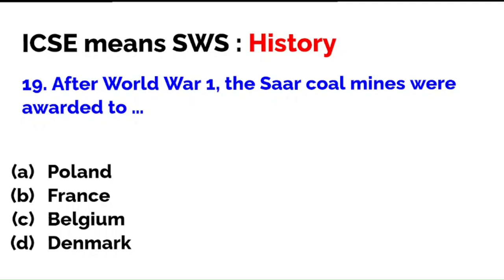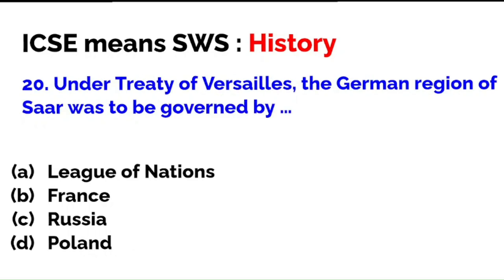After World War One, the Saar coal mines were awarded to — Poland, France, Belgium, or Denmark? The correct answer is France. A related question: under the Treaty of Versailles, the German region of Saar was to be governed by — the League of Nations, France, Russia, or Poland? The correct answer is A — the League of Nations. The coal mines went to France, but the region itself was governed by the League of Nations.